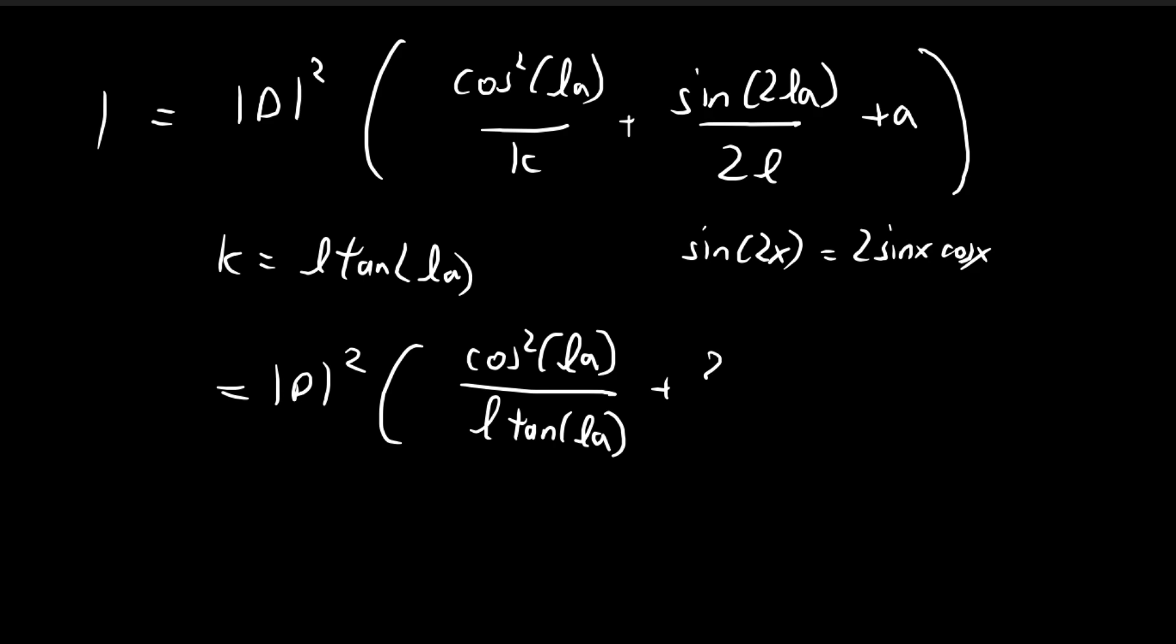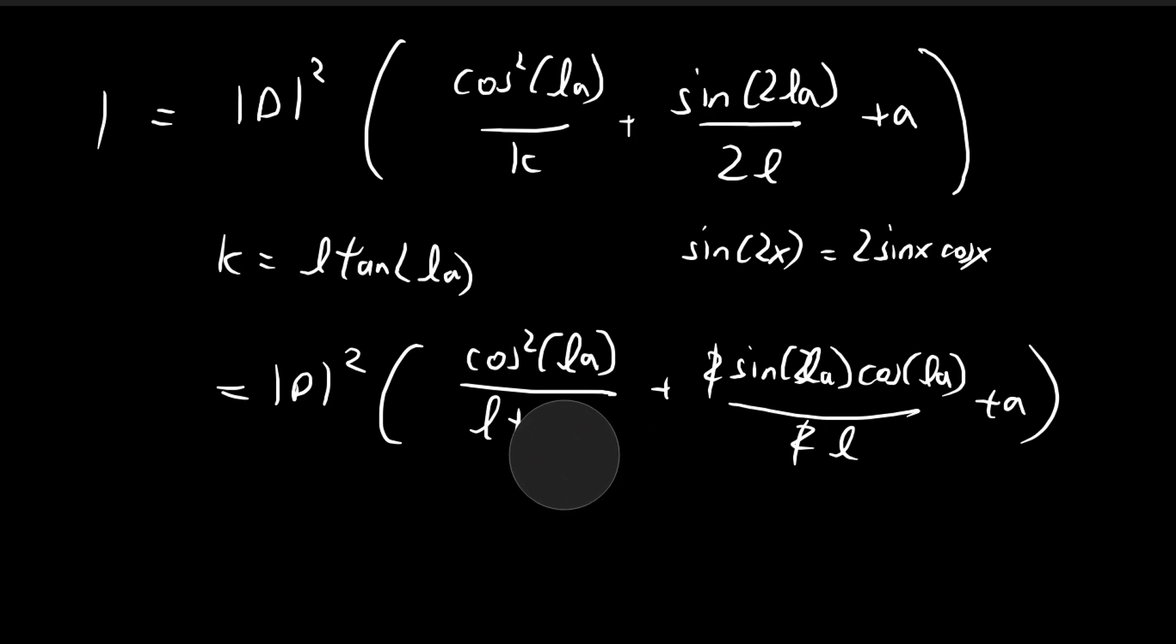So sine 2 l a is going to equal 2 sine l a times cosine l a, divided by 2 l plus a. So you see the 2's cancel out. And then for this tangent l a, I'm going to express this as sine l a divided by cosine l a. So this gives me cosine to the power of 3 l a.